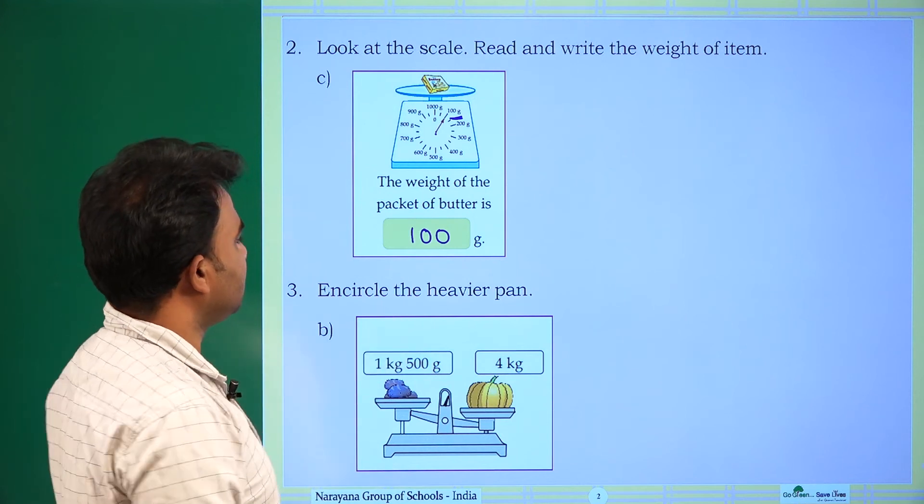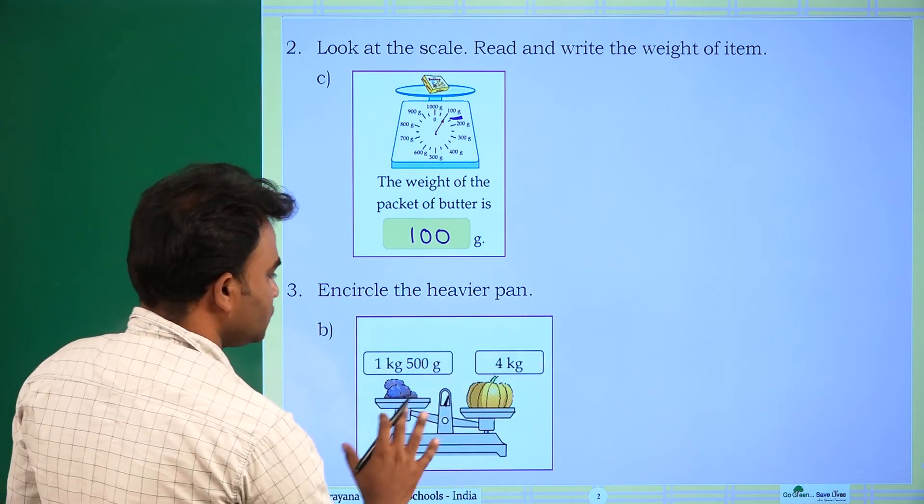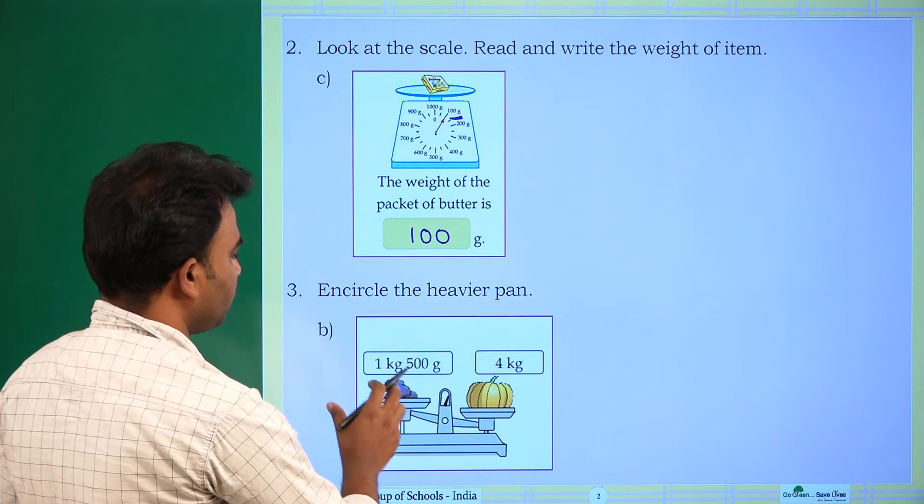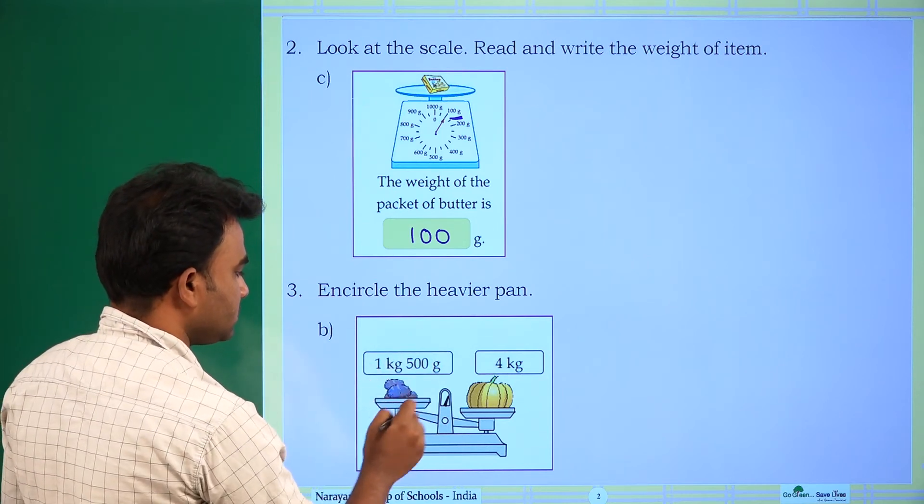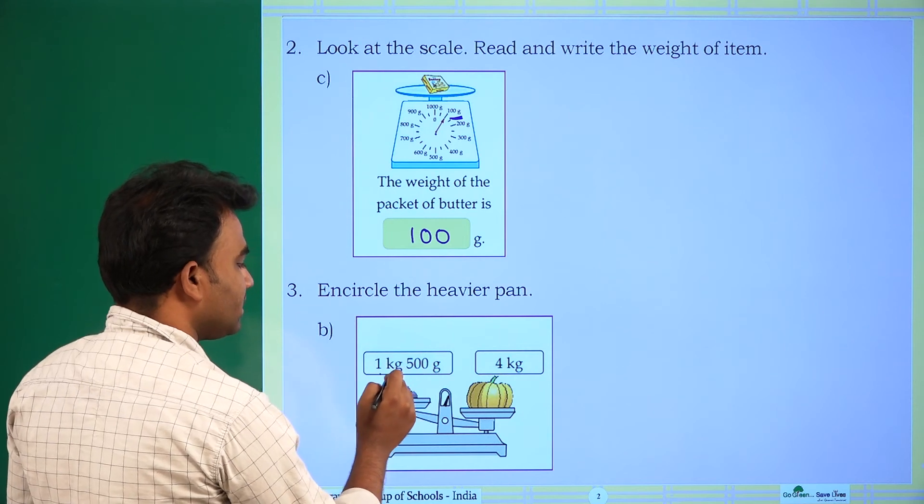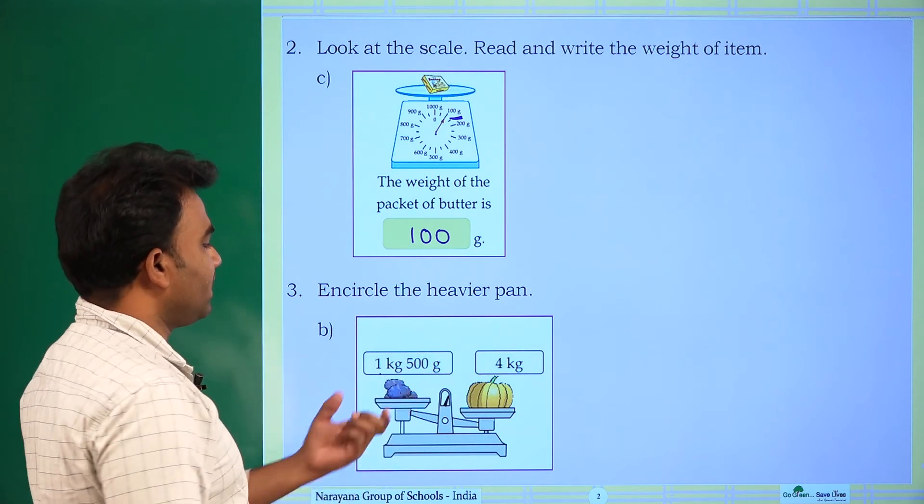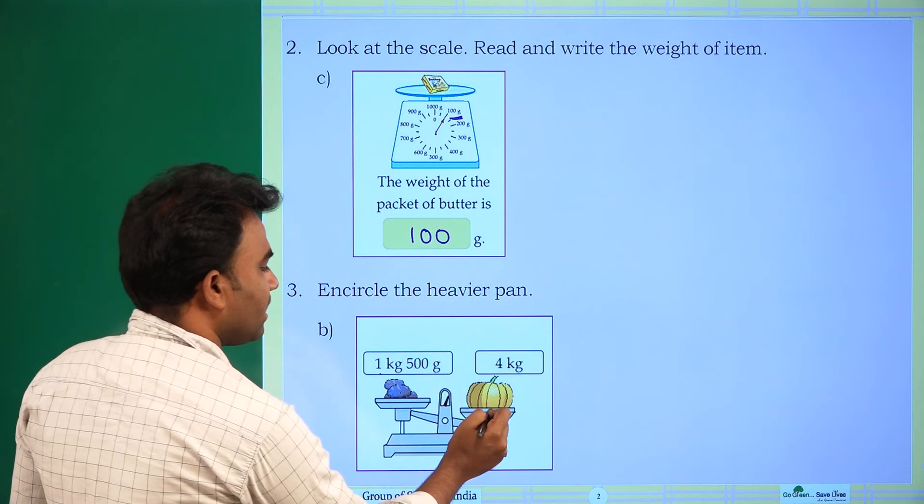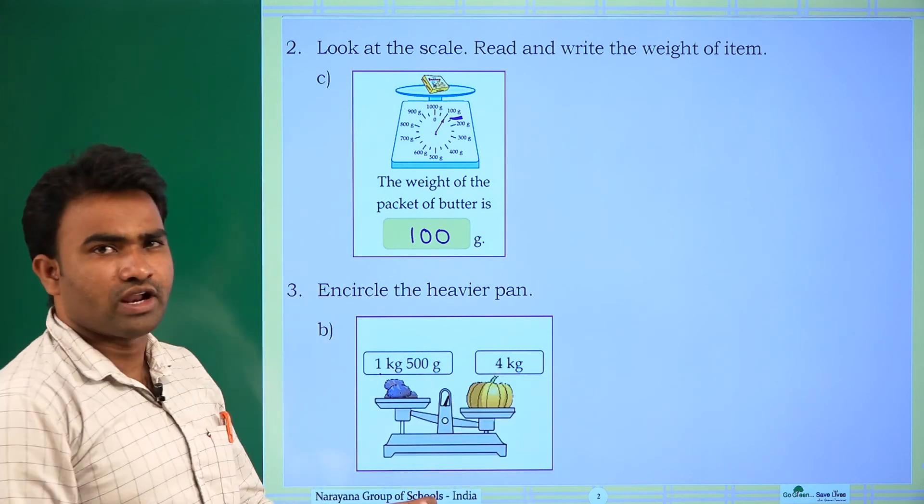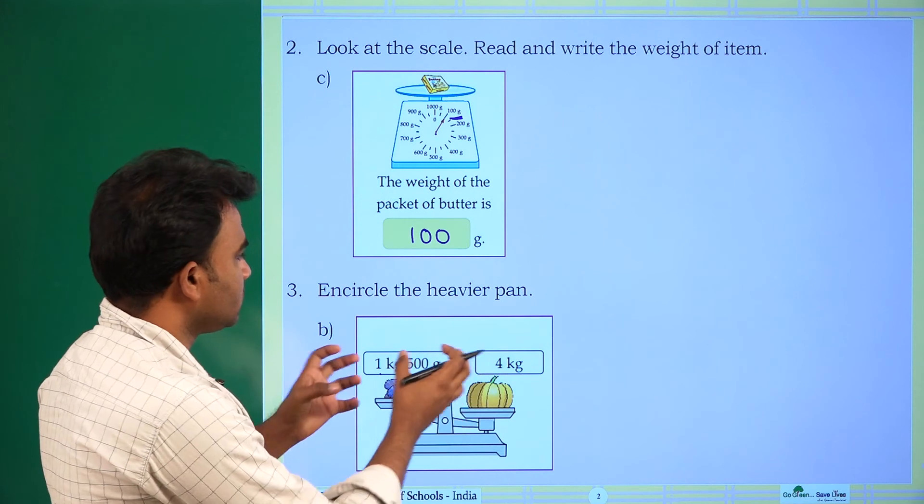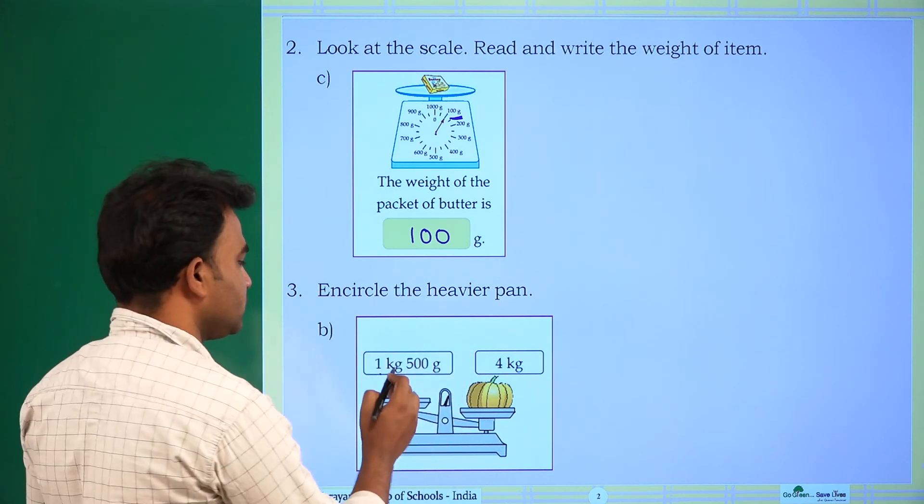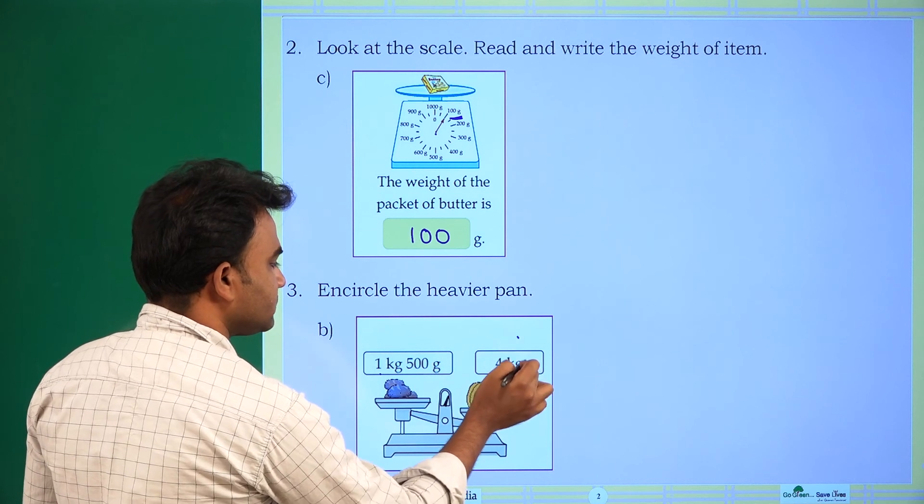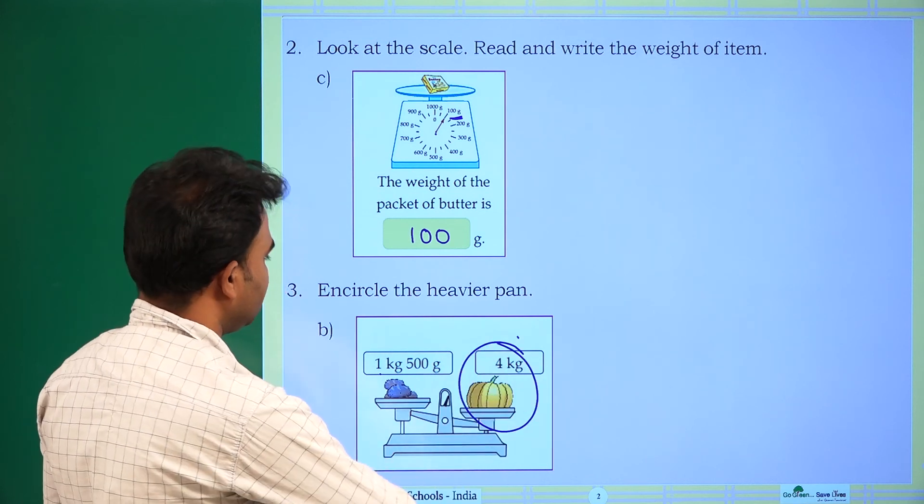Next, encircle the heavier pan. In these two, observe the weight of both items. The weight of this is 1 kilogram 500 grams and weight of this is 4 kilograms. Among these two, the heavier one is 1 or 4? 4 kilograms, so encircle it.